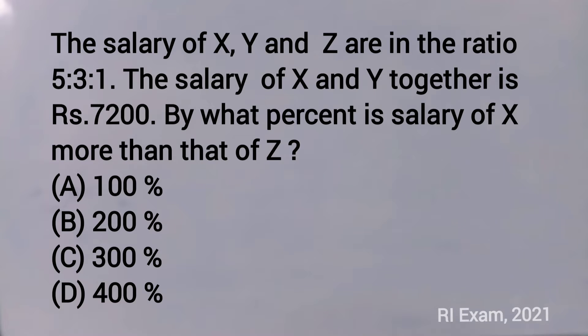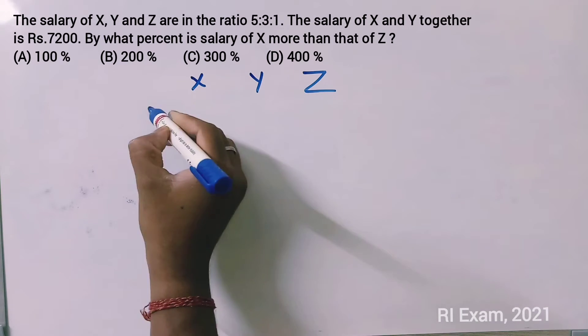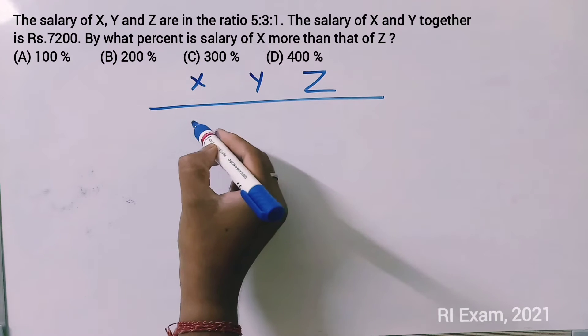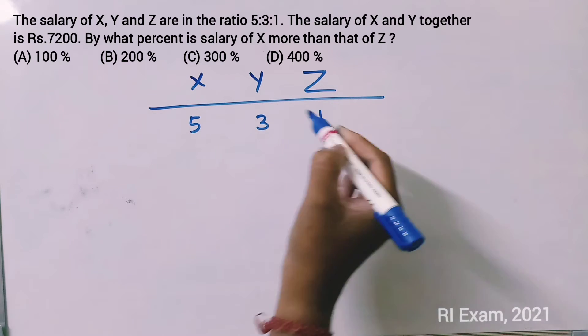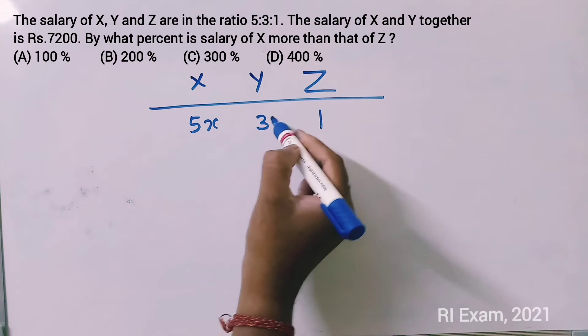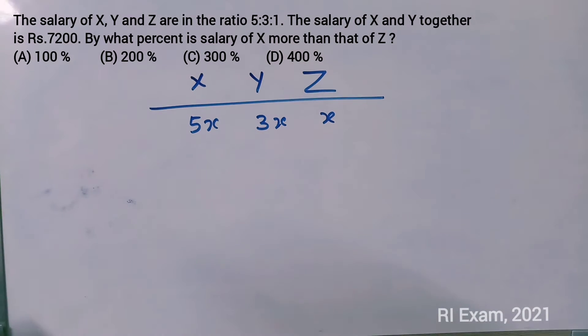By what percent is salary of X more than that of Z? Now X, Y and Z. The salary ratio is equal to 5 is to 3 is to 1. Means 5x, 3x. This means 1x means x.